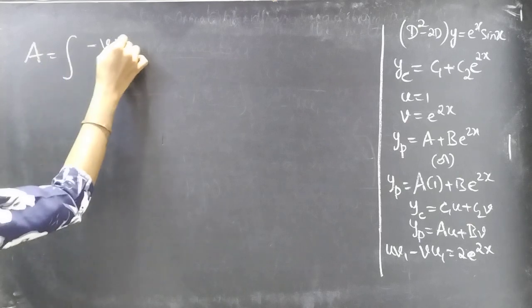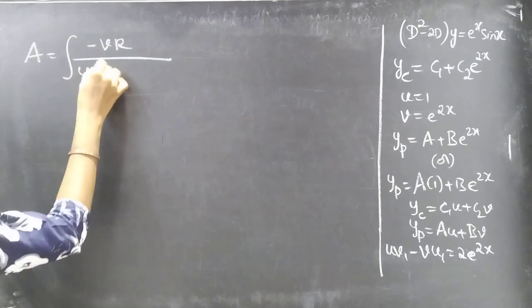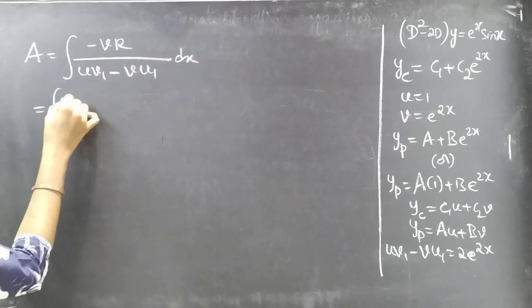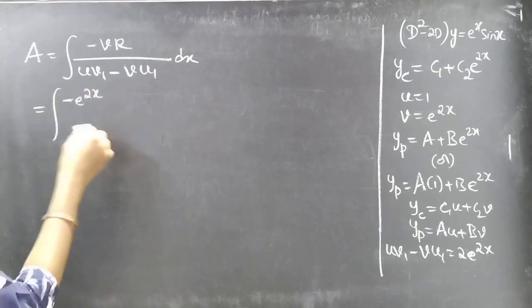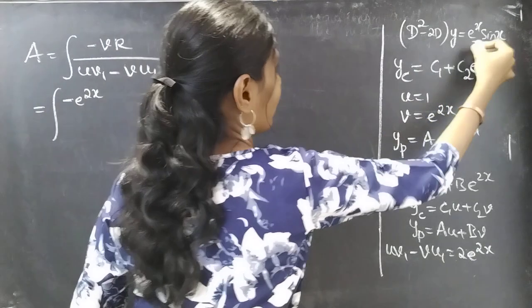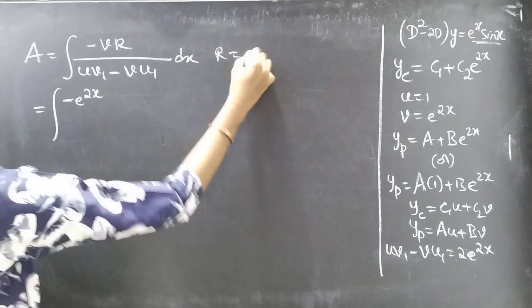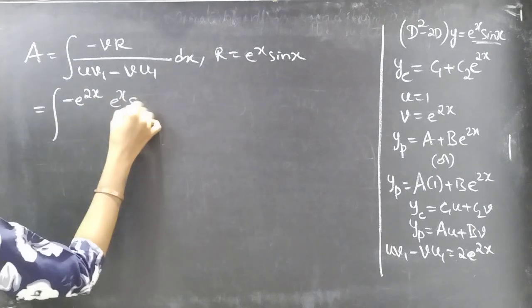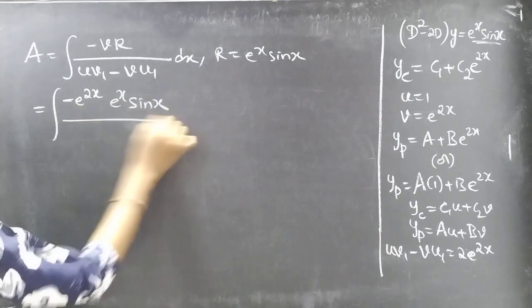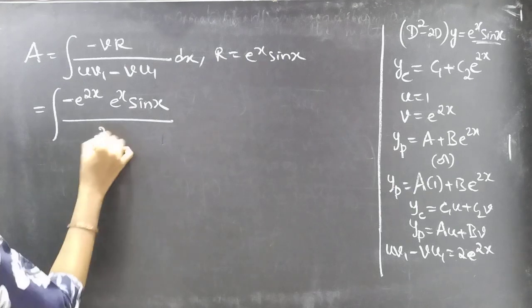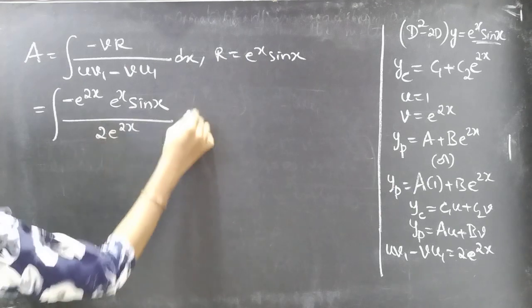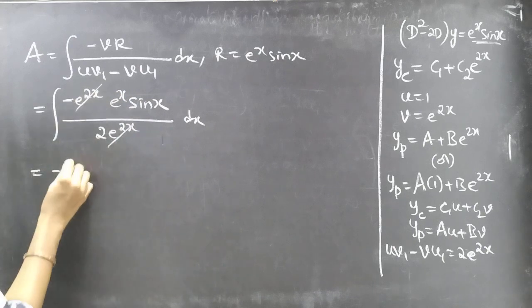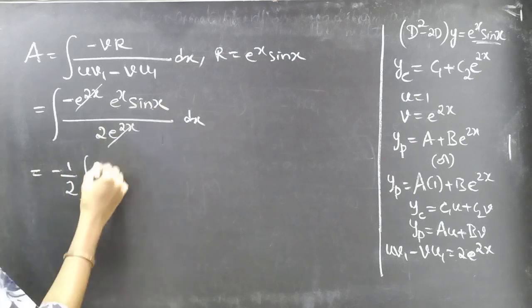a is given by ∫[-vR / (uv₁ - vu₁)] dx = ∫[-e^(2x) · eˣsinx / (2e^(2x))] dx. Simplifying, we get -1/2 · ∫eˣsinx dx.